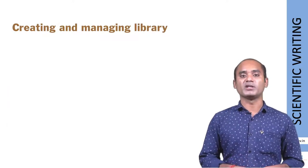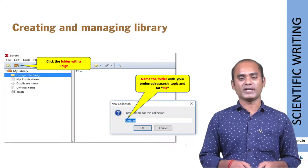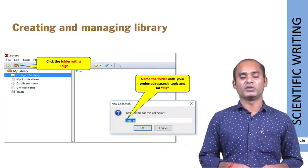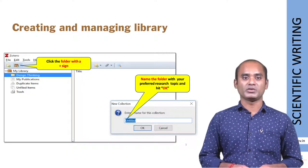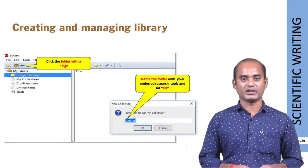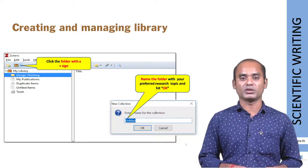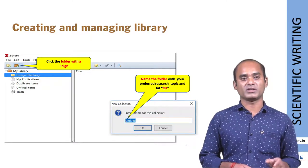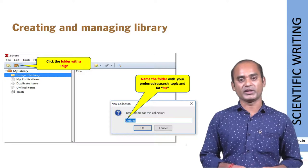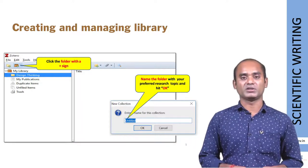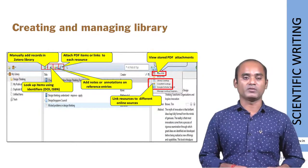So far we know how to download and install Zotero and its basic components and functions. The next step is creating a library for your own project or research. Go to the folder with a plus sign and click that button — a box will appear. Enter the title of your project or dissertation, then click OK. You can see your folder name in the left library panel.